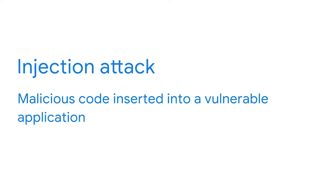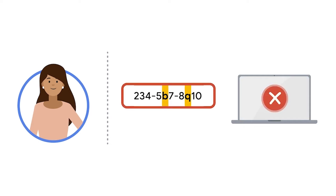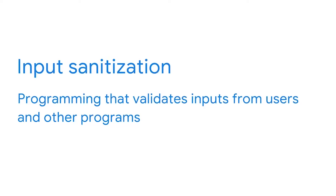An injection attack is malicious code inserted into a vulnerable application. The infected application often appears to work normally because the injected code runs in the background unknown to the user. Applications are vulnerable to injection attacks because they're programmed to receive data inputs — something the user types, clicks, or something one program shares with another. When coded correctly, applications should be able to interpret and handle user inputs. This is known as input sanitization — programming that validates inputs from users and other programs.